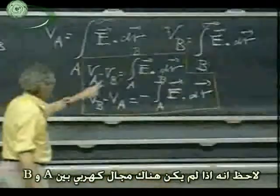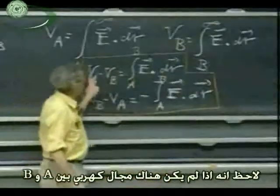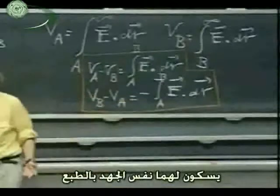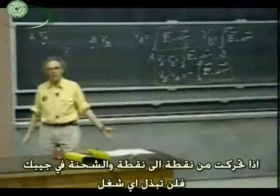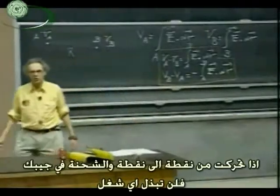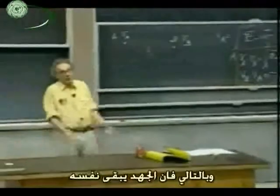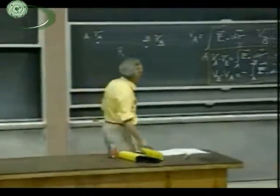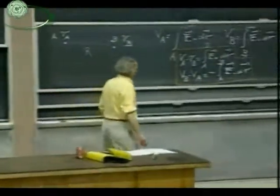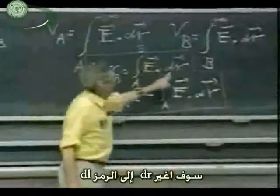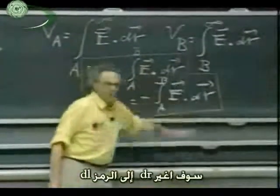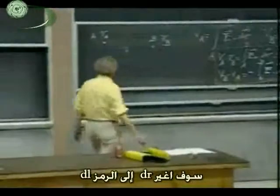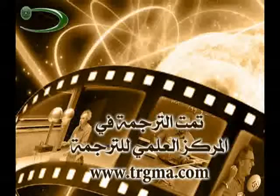Notice that if there is no electric field between A and B, they have the same potential, of course. Because when you march from A to B with a charge in your pocket, no work is done, so the potential remains the same. I will change this dR to a different symbol, which I call dL.